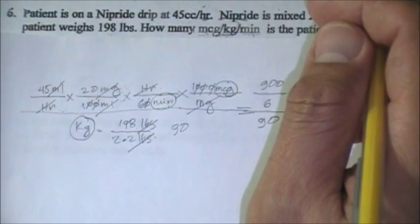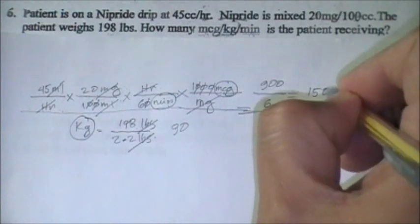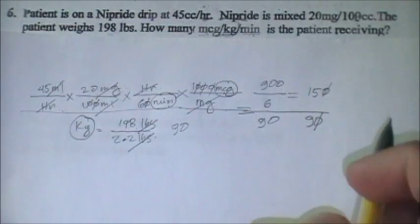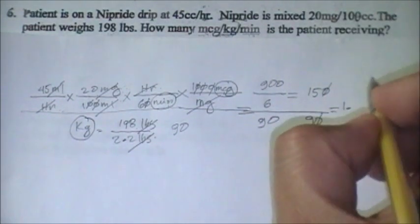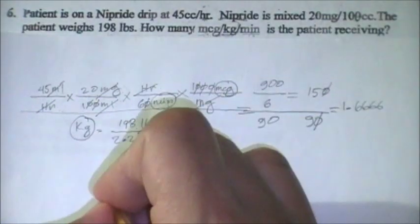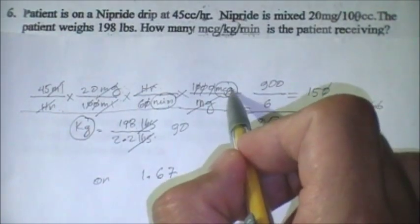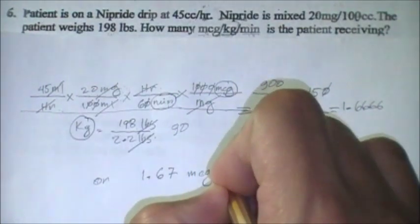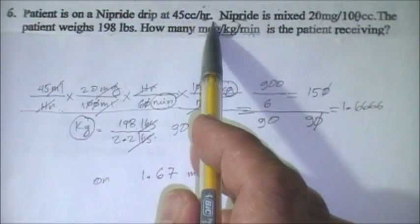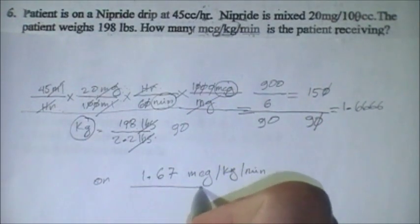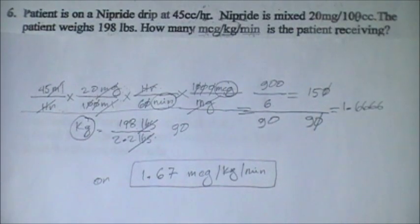900 divided by 6 is 150, so we have 150 over 90. Cancel the zeros: 15 divided by 9 equals 1.6666, or 1.67. Bringing all our units together: micrograms per kilogram per minute. So the patient receiving 45 mL per hour is actually receiving 1.67 micrograms per kilogram per minute. That's how we solve this problem. Thanks for watching!